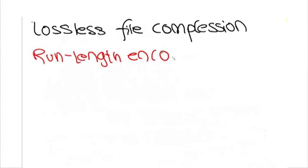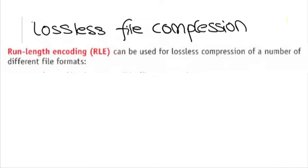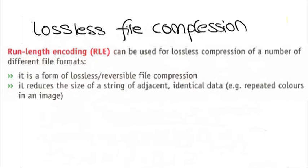Run length encoding, RLE, can be used for lossless compression of a number of different file formats. It is a form of lossless reversible file compression. It reduces the size of a string of adjacent identical data, for example, repeated colors in an image. A repeating string is encoded into two values.